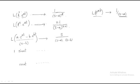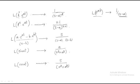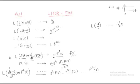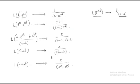Finally, for sinusoidal time-domain signals, we have two important formulas. The Laplace transform of sin(at) = a/(s² + a²), and the Laplace transform of cos(at) = s/(s² + a²). These are common time-domain signals converted to the s-domain. These general signals are very useful for solving control system problems.